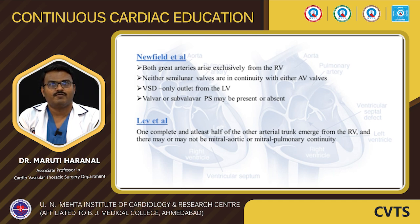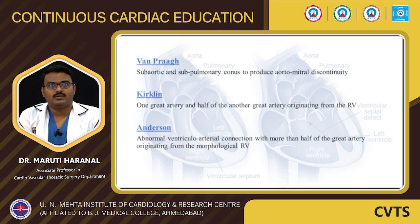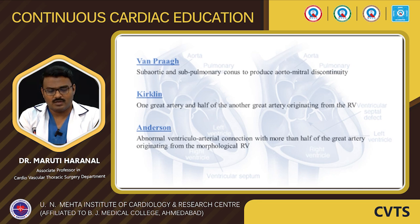According to Lev et al., one complete and at least half of the other arterial trunk should emerge from the RV, and there may or may not be mitro-aortic or mitro-pulmonary continuity. According to Van Praagh, bilateral conus should be present to produce mitro-aortic discontinuity. According to Kirklin, one great artery and half of another should originate from the RV. Anderson defines DORV as abnormal ventriculo-arterial connection in which more than half of each great artery originates from the morphological RV.